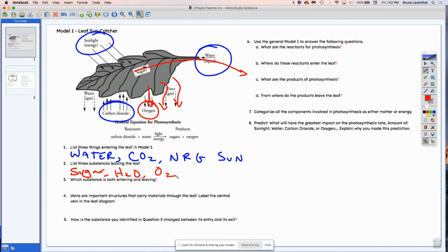Which substance is both entering and leaving the leaf? So note that water leaves the leaf and water enters the leaf. When water leaves the leaf, we call it transpiration. And this is why plants wilt on sunny days, on hot days.